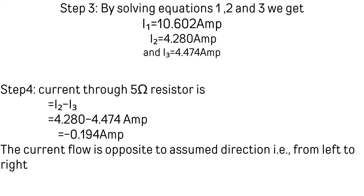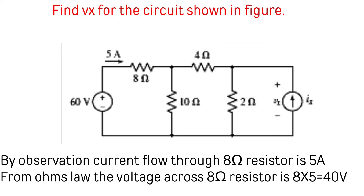The current flowing through the 5 ohm resistor is either I2 − I3 or I3 − I2. Therefore I2 − I3 = 4.280 − 4.474 = −0.194 amperes. Since the result is negative, the actual current direction is opposite to the assumed direction — that is, from left to right, which is the direction of I3.